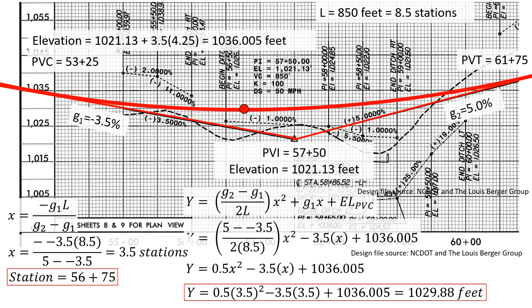So our low point occurs at station 56 plus 75 at an elevation of 1029.88 feet.